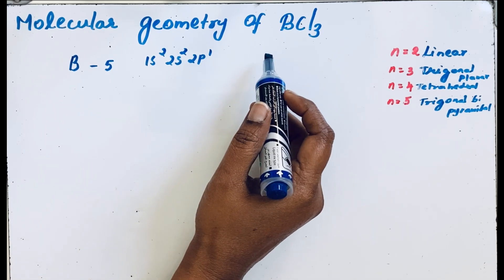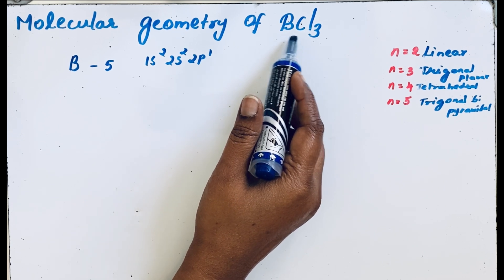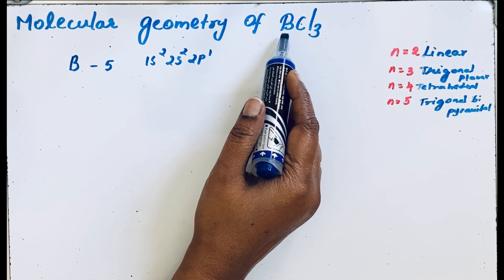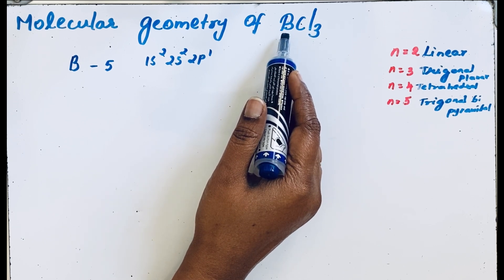To write the molecular geometry, first we should know that the central atom in BCl3 is boron. Boron is less electronegative compared to chlorine, so boron is the central atom.